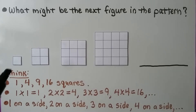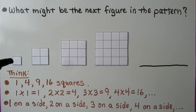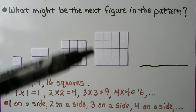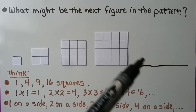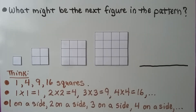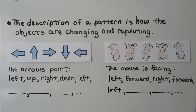For the next figure in the pattern, we see 1 square, 4 squares, 9 squares, then 16 squares. We can think: 1×1=1, 2×2=4, 3×3=9, 4×4=16, so the next must be 5×5=25. There is one unit on each side growing by one, so five across and five down gives 25 squares. The one after that would be 6×6=36 squares. The description of a pattern shows how objects are changing and repeating.